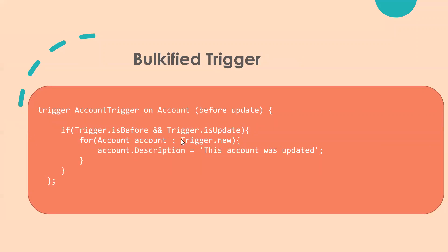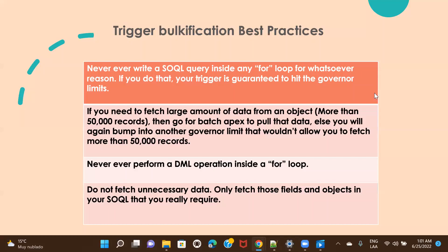To bulkify the code, we can iterate over the list — since trigger.new always returns a list of SObject records. In the bulkified version, you iterate over the list and keep updating the account description. This way, all thousand account records will have their description updated on every update, even when using Data Loader.